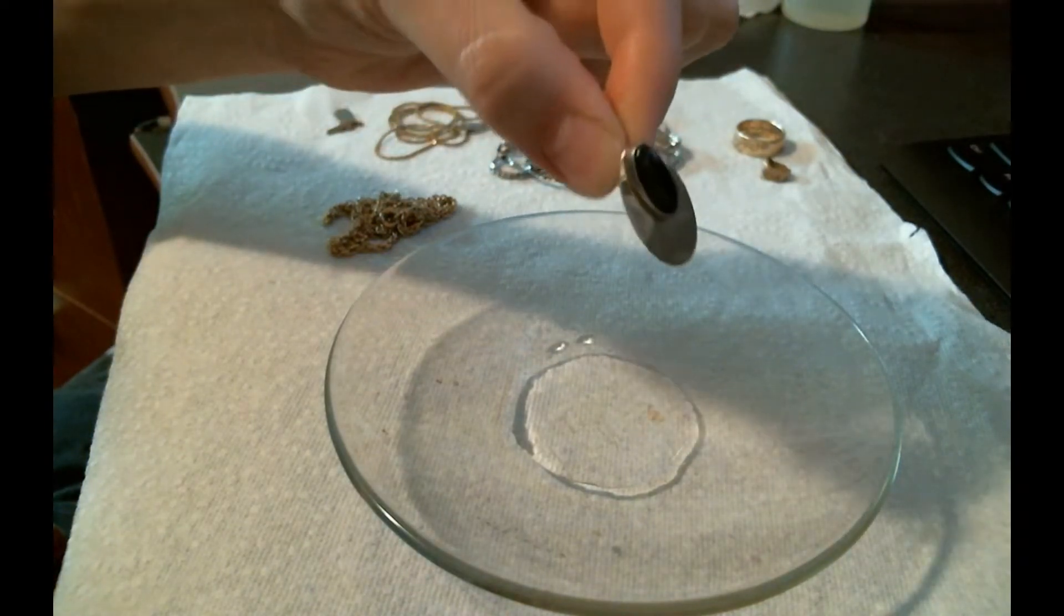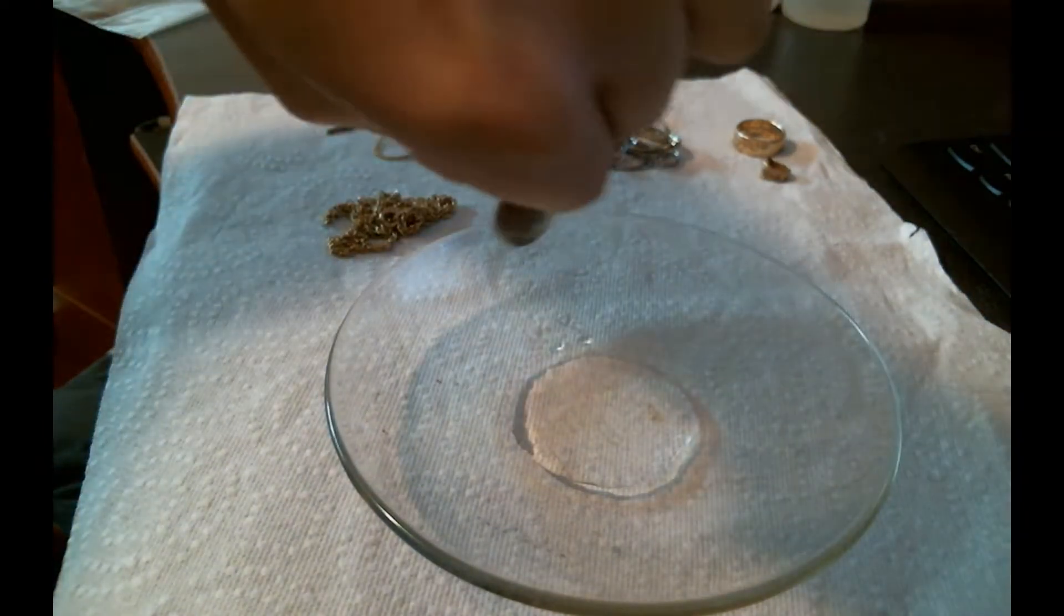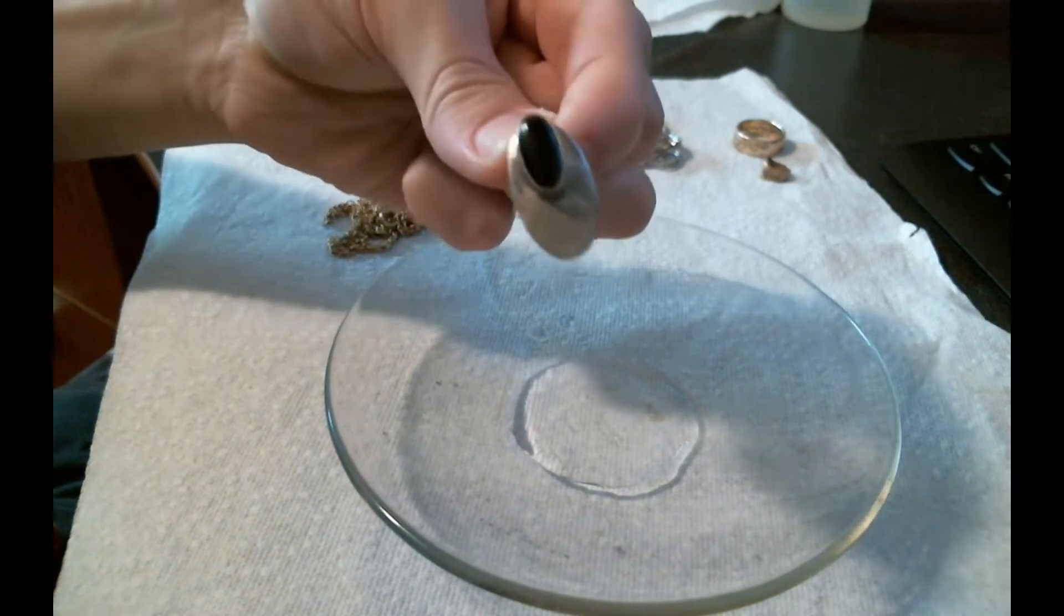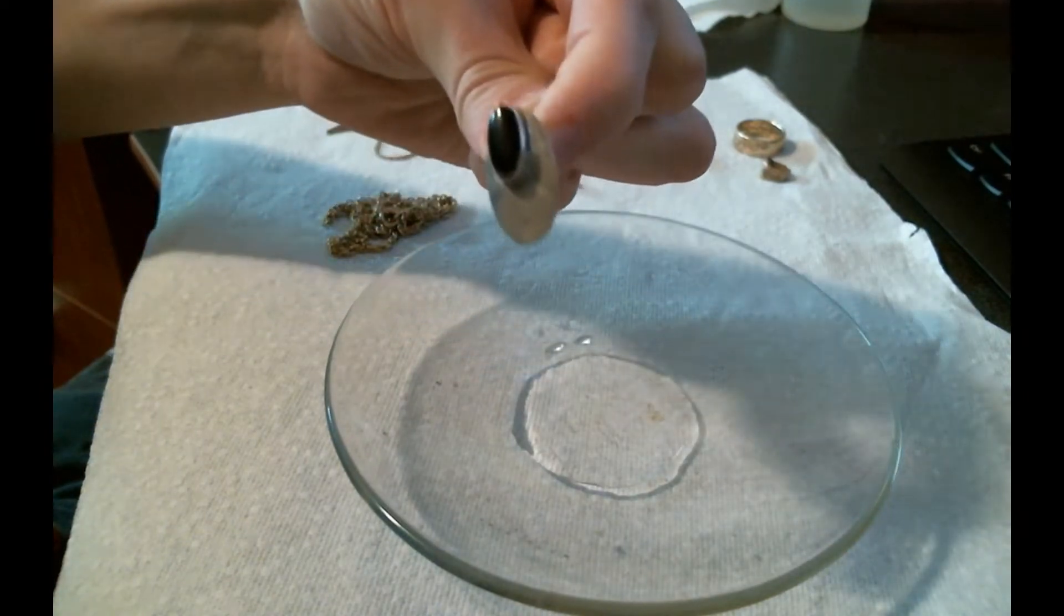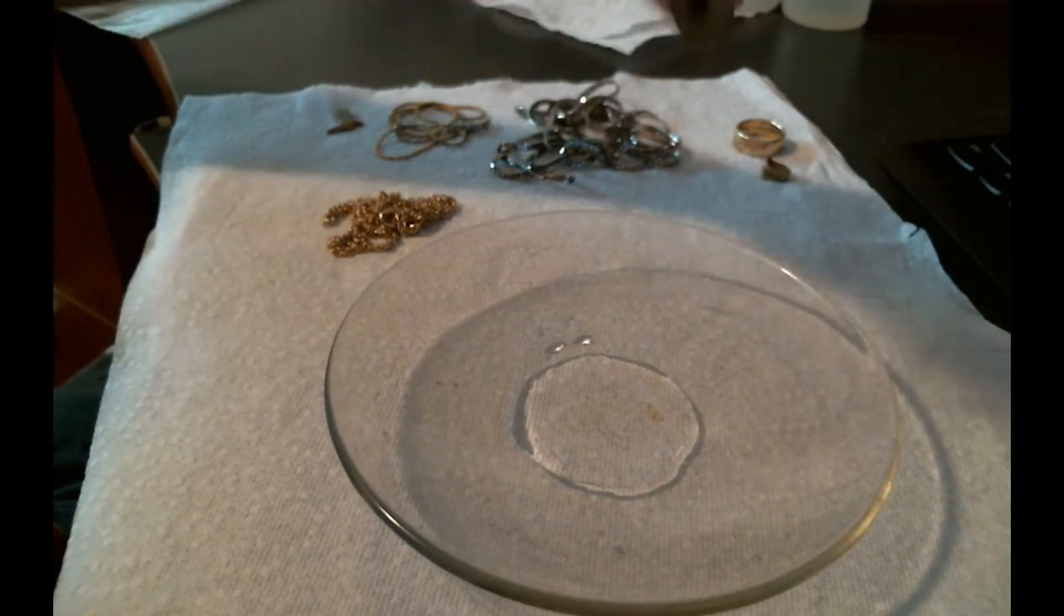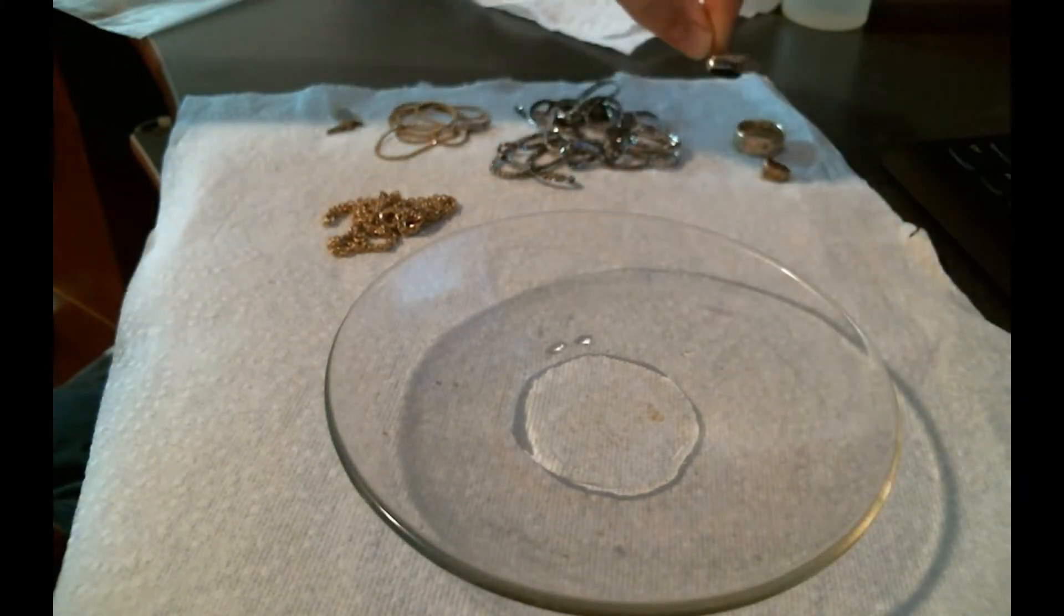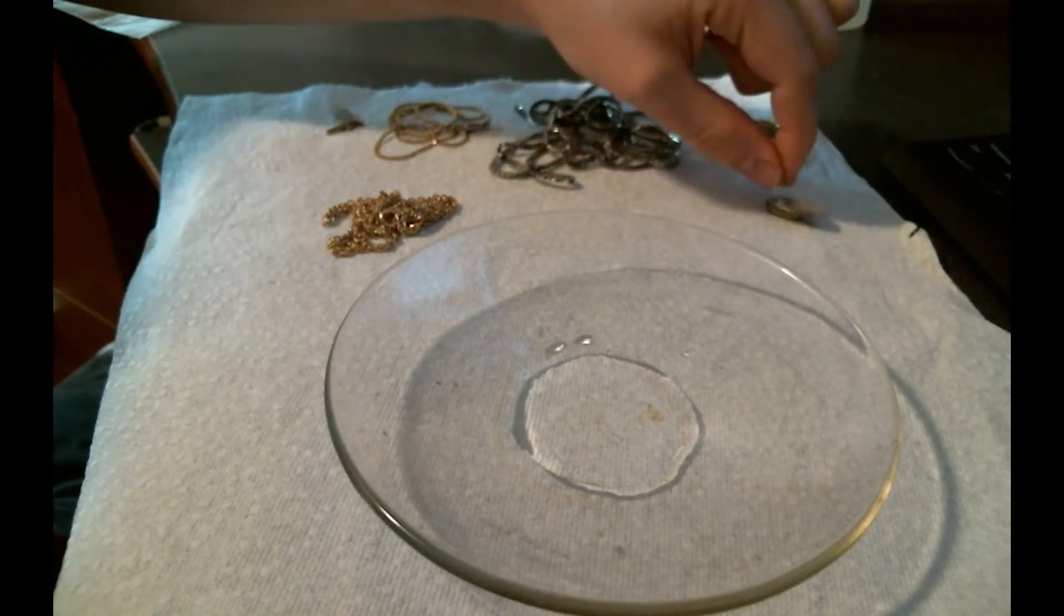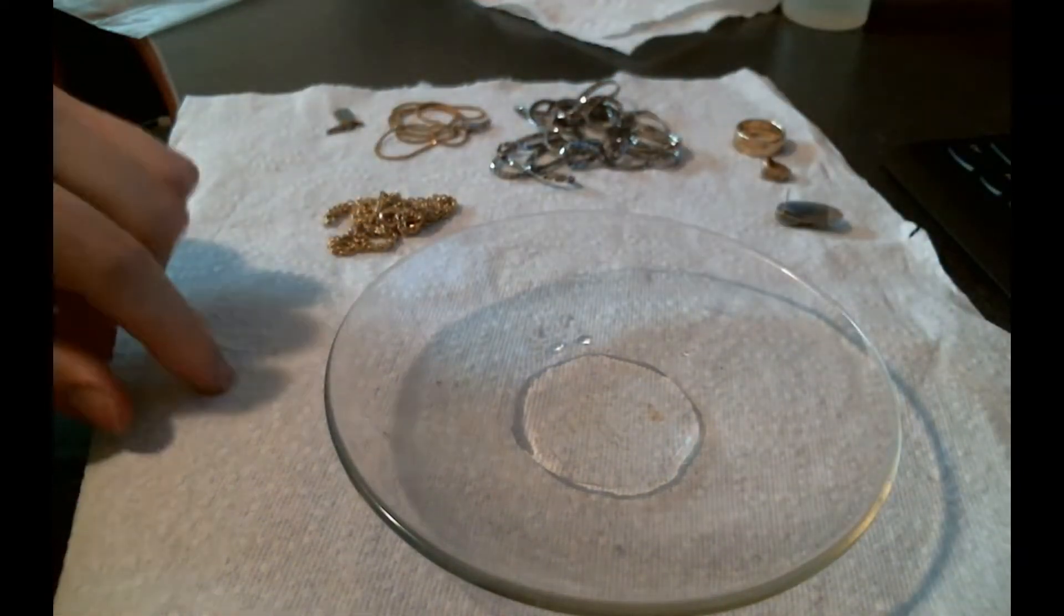That'll ruin any silver jewelry you put in there. Luckily this earring needs to be refined anyway because it's missing its pair. Nitric acid will ruin the finish of silver jewelry, so I usually don't test it. I just look for marks on silver if it has marks.